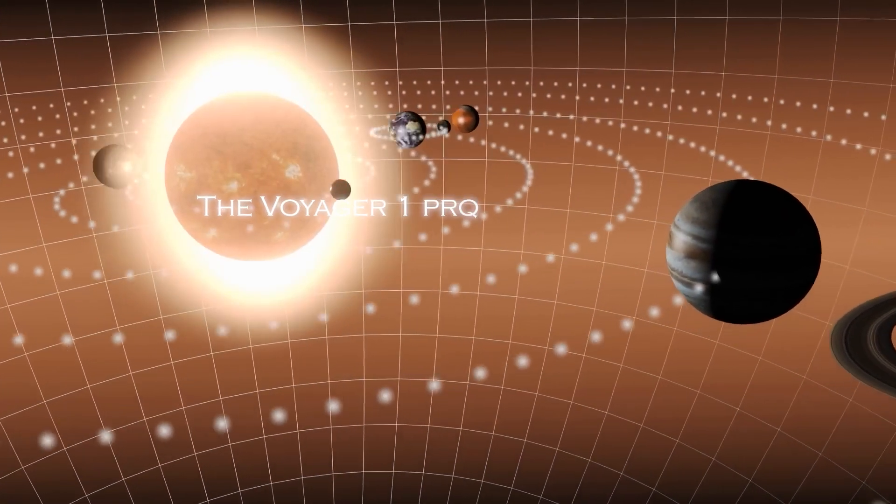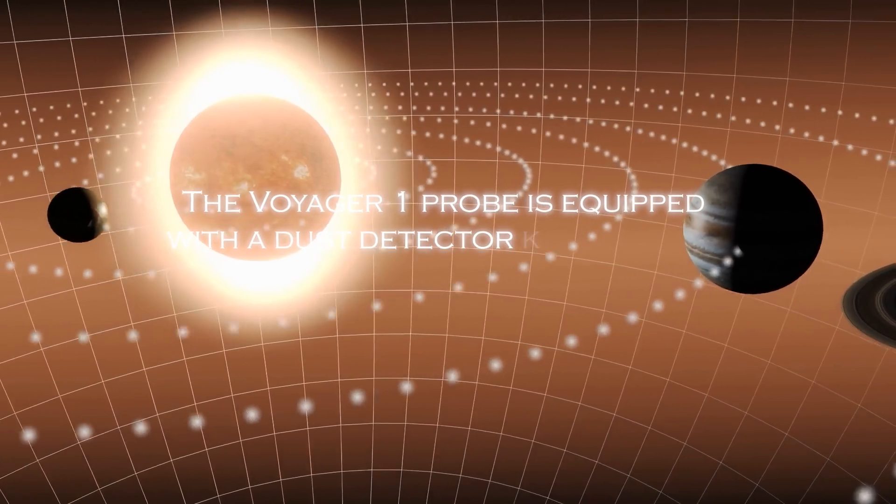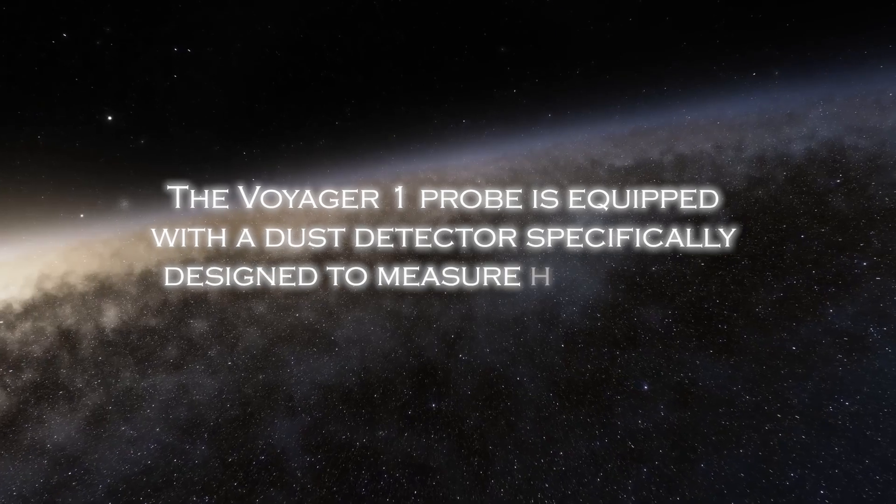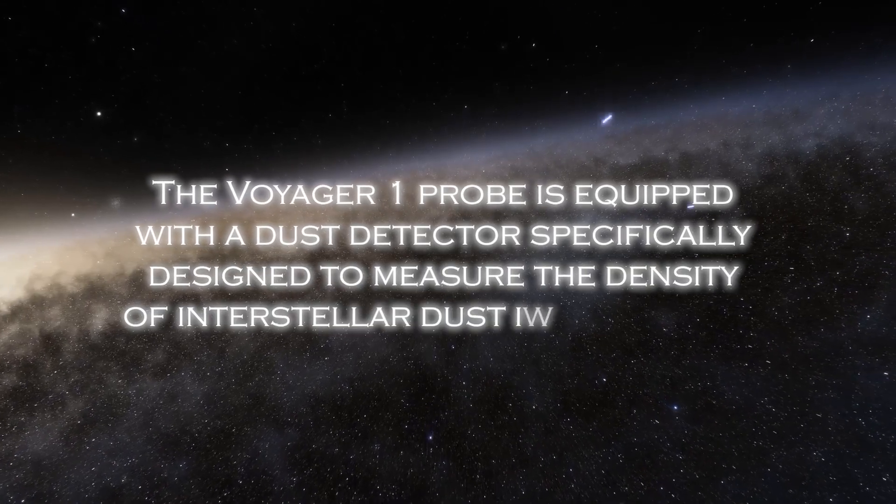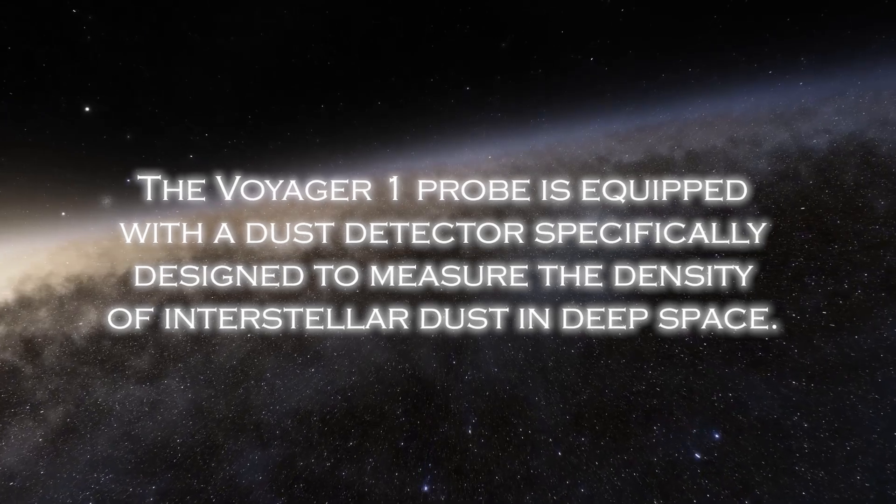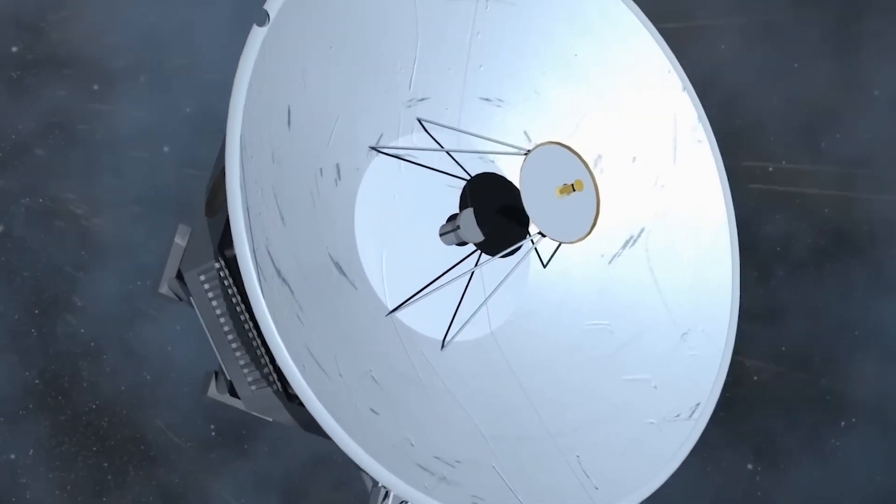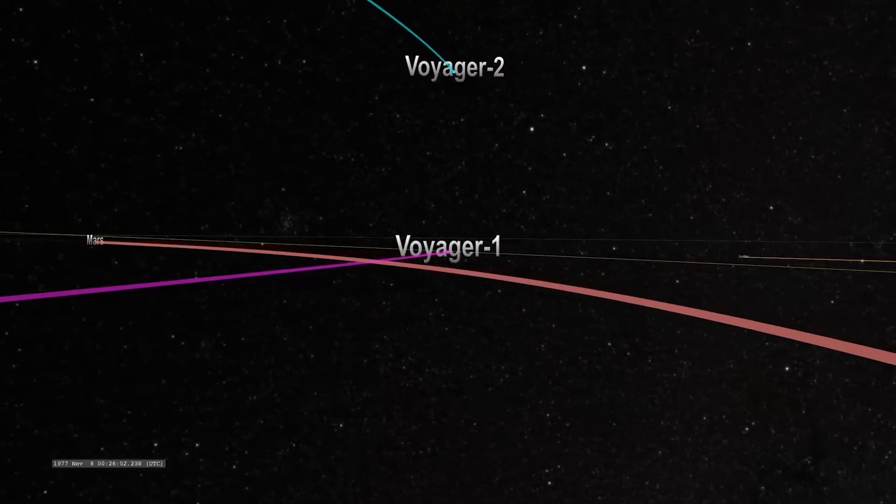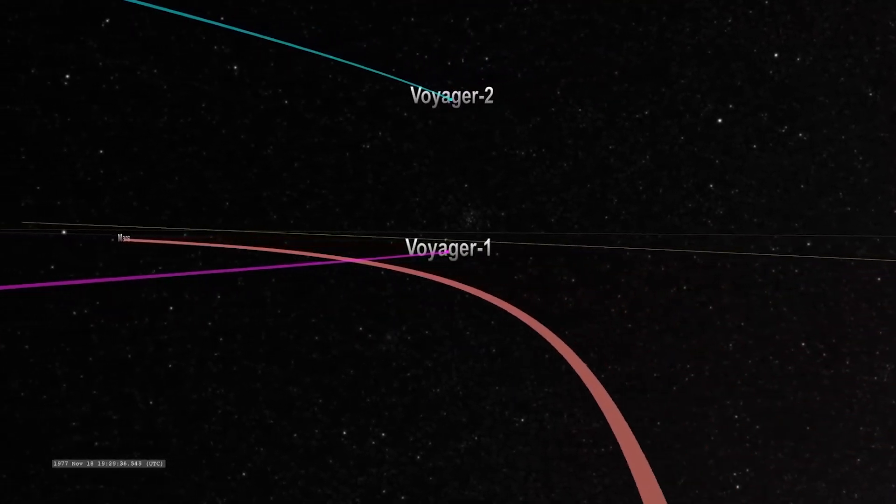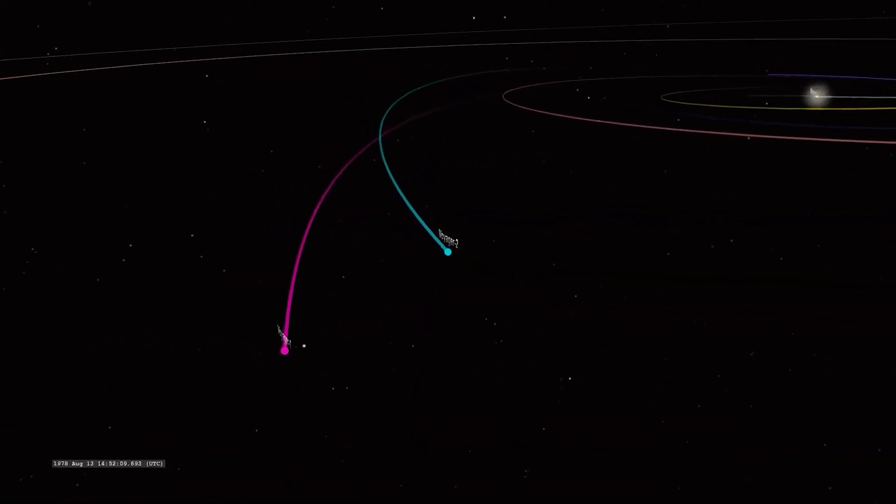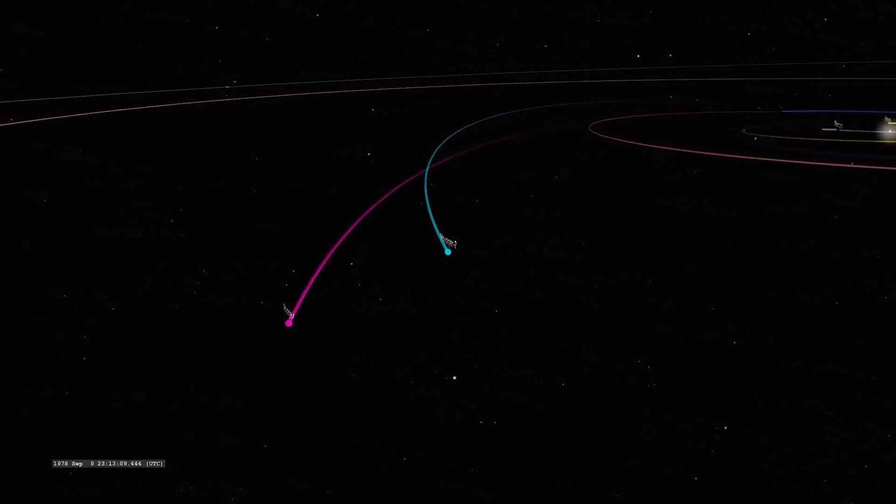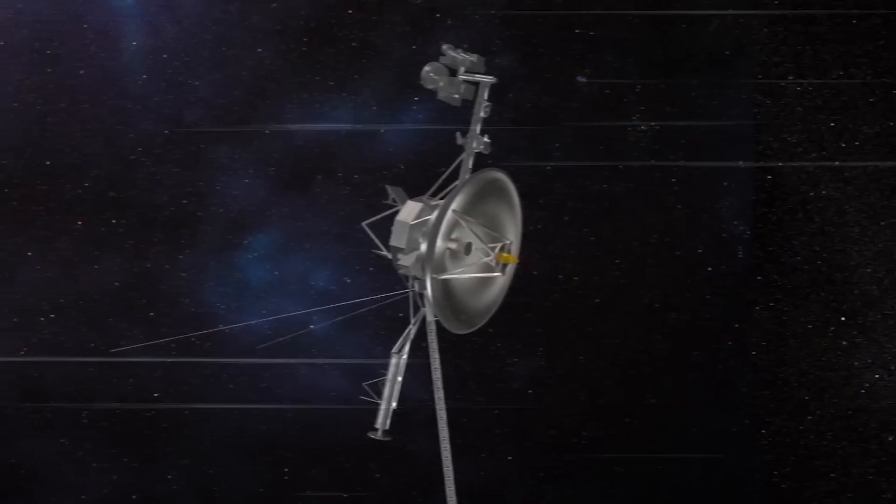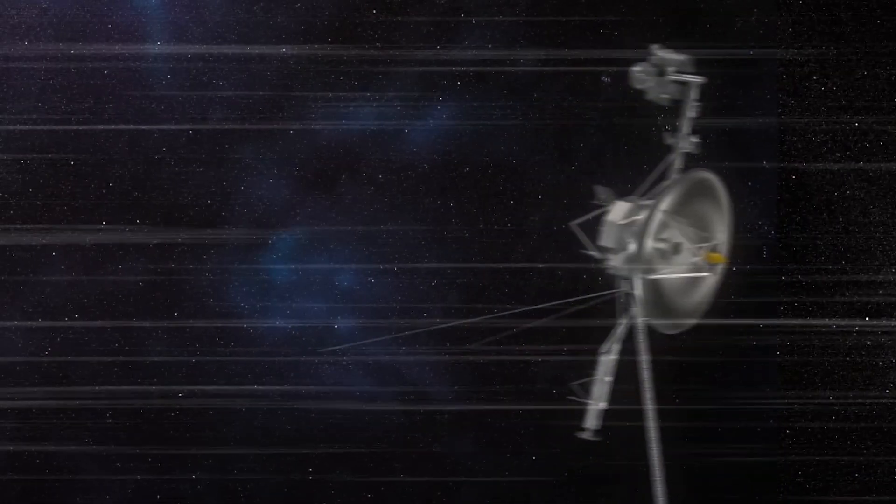The Voyager 1 probe is equipped with dust detectors, specifically designed to measure the density of interstellar dust in deep space. However, communication with Voyager 1 has become more difficult due to the limited resources NASA's global antenna system has to receive the mission signals. This has resulted in less frequent communication opportunities than they used to be.